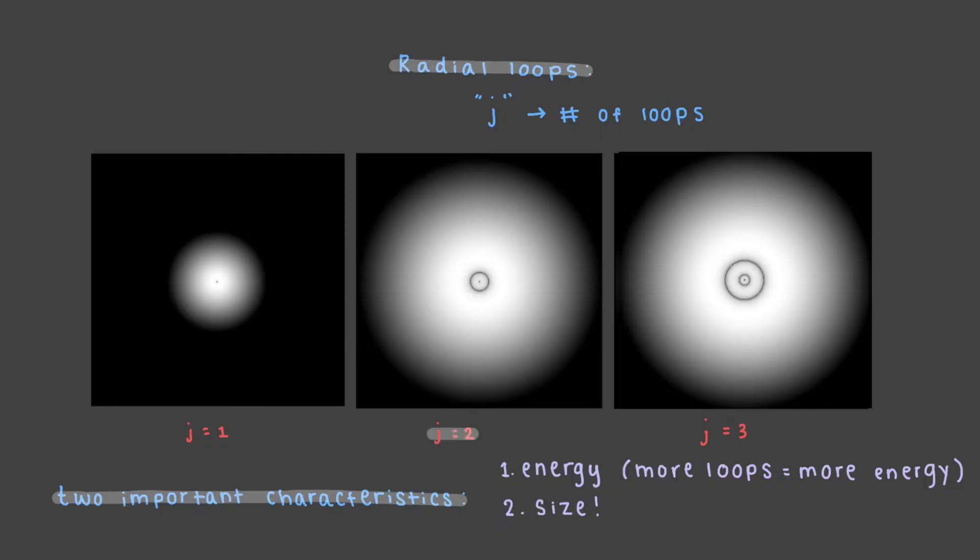This wave with two loops is bigger than the one loop wave, and the three radial loop wave is bigger than both. The size of these 3D waves depend on the number of loops.